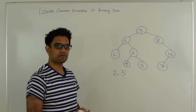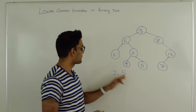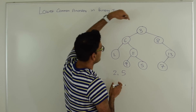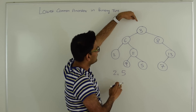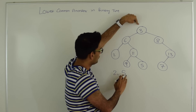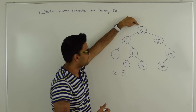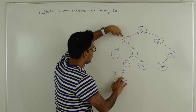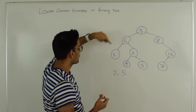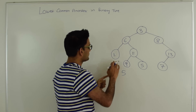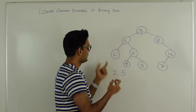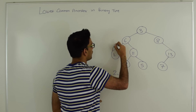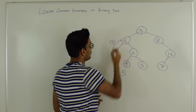Let me explain with an example. We're looking for the lowest common ancestor of 2 and 5. Starting from node 3: 3 is not the same as 2 or 5, so we expand search to the left. 6 is not the same as 2 or 5, so we go left again. We check if 2 is the same as 2 or 5 — it is — so from this point we return node 2.